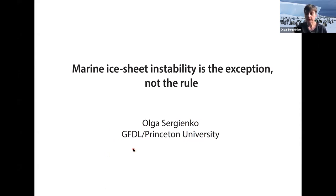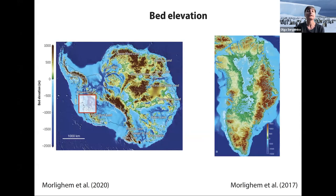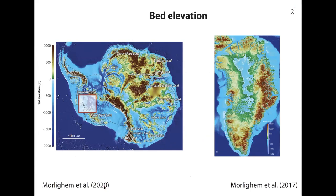The subject of this talk is marine ice sheets. Marine ice sheets are ice sheets that sit on a bed which is below sea level. What I'm looking at here is the product of Matthew Morlighem's BedMachine — Antarctica on the left and Greenland on the right. As you can see, there are a lot of blues; everything in blue is below sea level. Everything in green and brown is above sea level, and there are a lot of places that are below sea level.